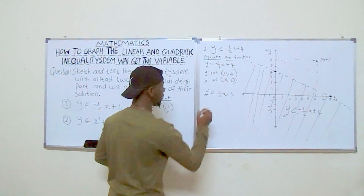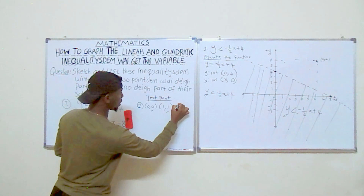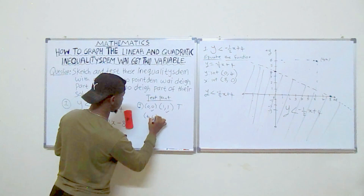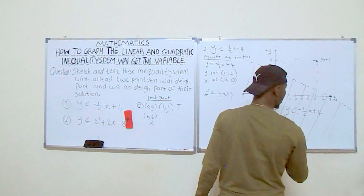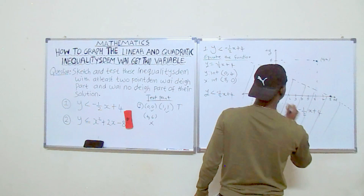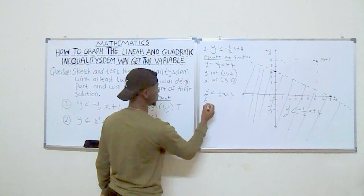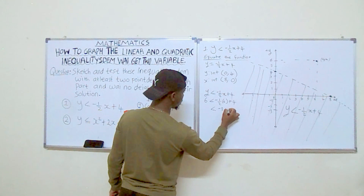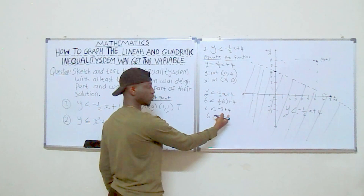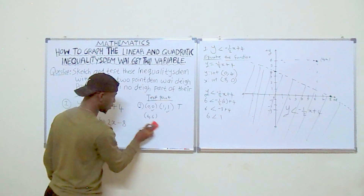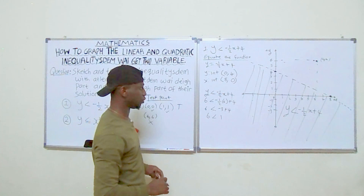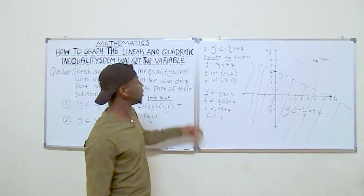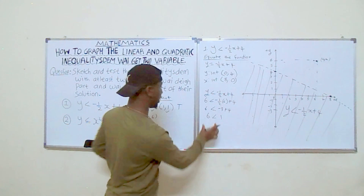Substituting (6, 6) into y less than negative one-half x plus four: six less than negative one-half times six plus four. That gives six less than negative three plus four, so six less than one. Six is not less than one, so this point is not part of our solution. This confirms that points outside the shaded region do not satisfy the inequality.